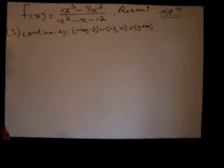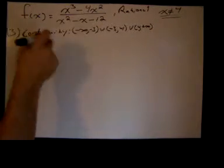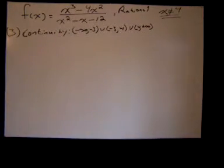Now we're going to look at the rest of the continuity issues with this function. So I've listed the intervals where f is continuous. It's continuous from negative infinity to negative 3, from negative 3 to 4, and from 4 to infinity, positive infinity.